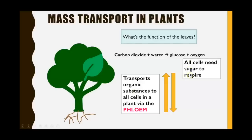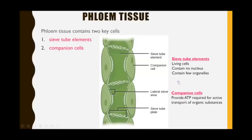The phloem is responsible for transporting the organic substances made in the leaf during photosynthesis up and down the plant, so that all of the cells have a source. Phloem tissue is made up of two key cells: sieve tube elements and companion cells.